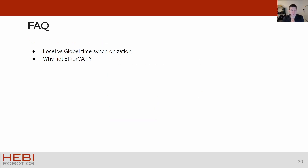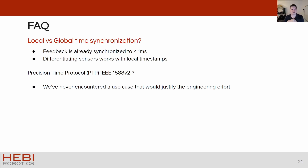The two most frequently asked questions we get are related to global time synchronization and EtherCAT. On the time synchronization side, we initially thought we would need global time synchronization at some point, but we found that incoming feedback is already synchronized to about a millisecond, which is good enough for our needs. For most practical aspects like differentiating sensors, accurate local timestamps are typically sufficient.